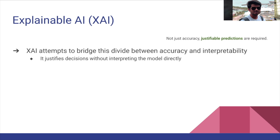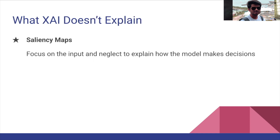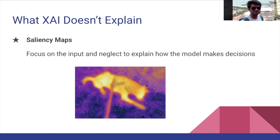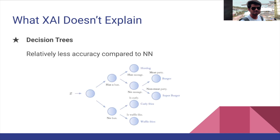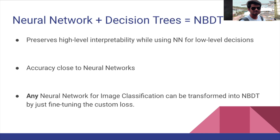Let's talk about what XAI doesn't explain. The first method is salience maps. Many of these methods focus on the input and neglect to explain how the model is making decisions. We have also seen neural network and decision tree hybrids underperforming — they fail to match neural network-level accuracy, lagging around 40% on image classification datasets. This accuracy gap damages interpretability, and high-accuracy interpretable models are needed to explain high-accuracy neural networks.